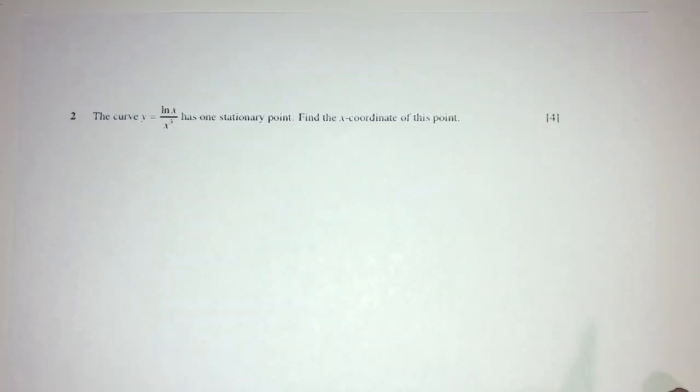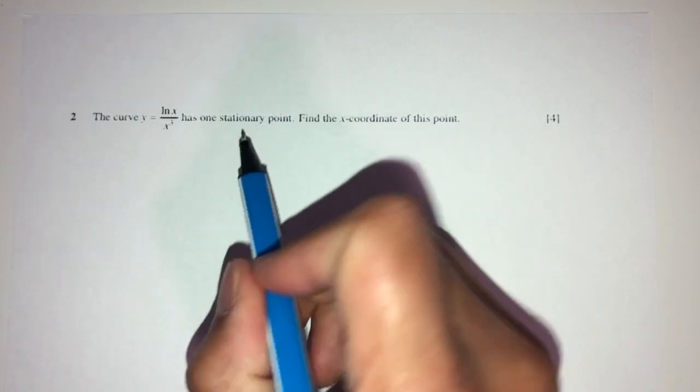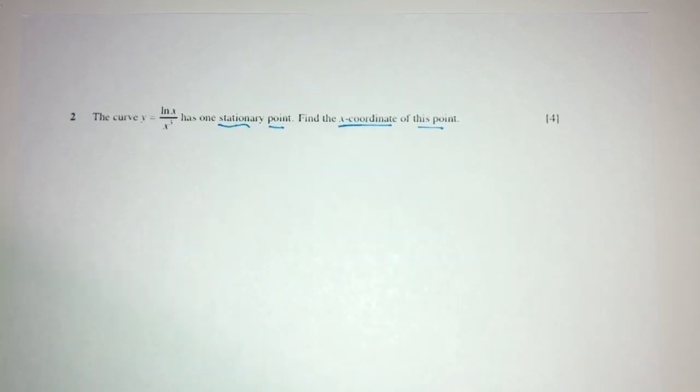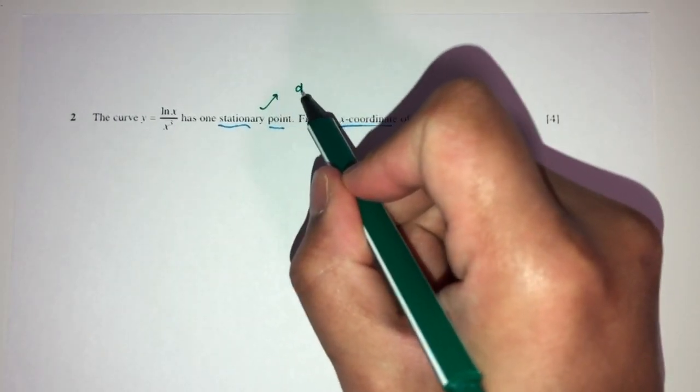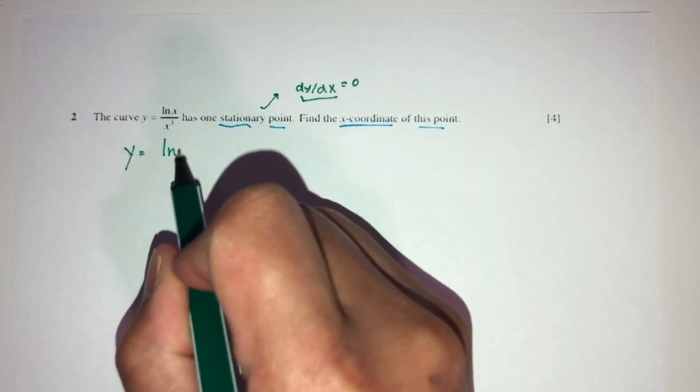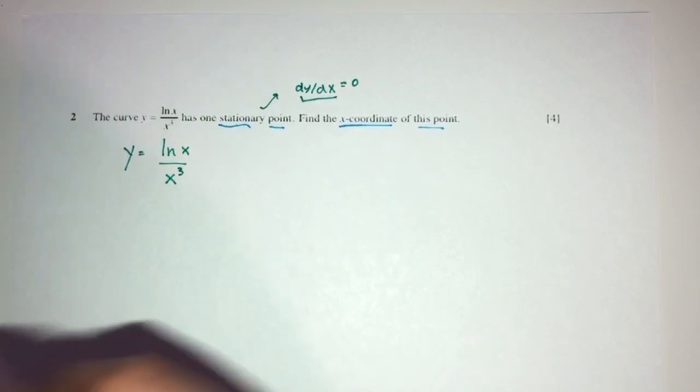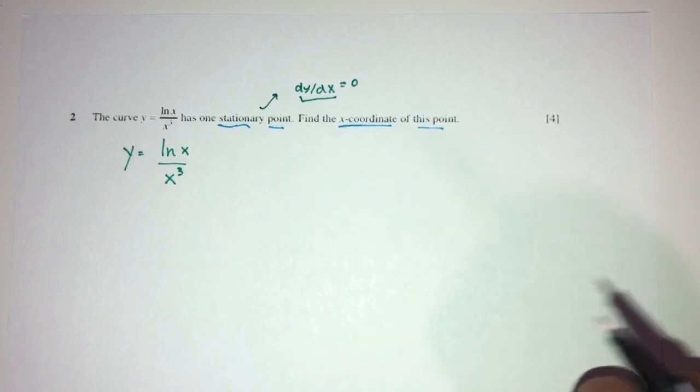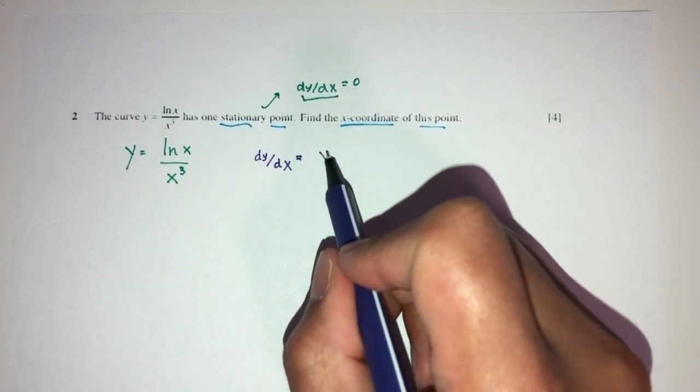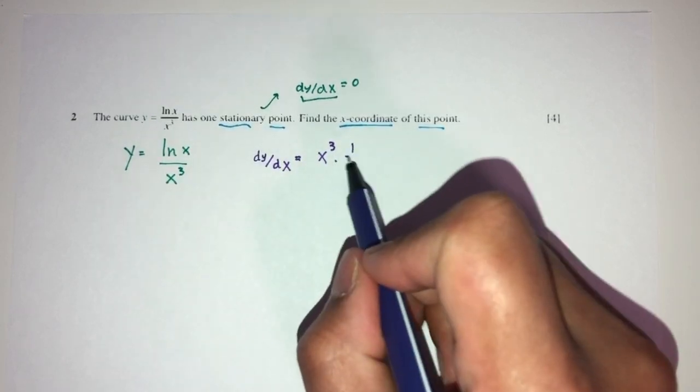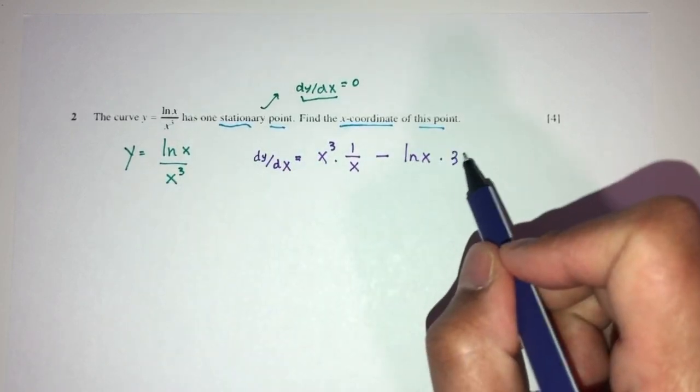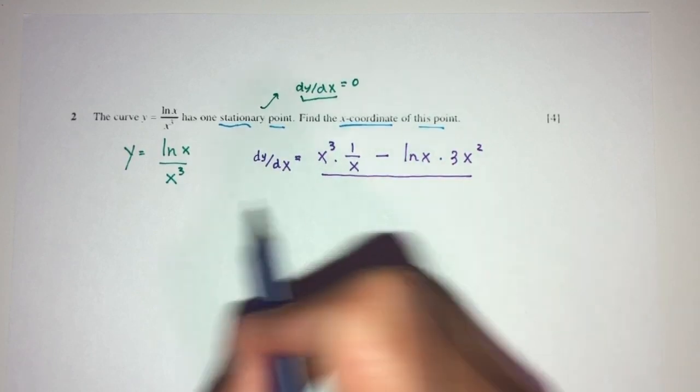Now, let's move on to question number 2. Here we have this equation of curve y = ln(x)/x³. We have a stationary point. We have to find the x coordinate of this point. Something we have to know right away is that at a stationary point, dy/dx has to be 0. So, we have to find dy/dx. y is given to you as ln(x) over x³. We have to differentiate using the quotient rule. dy/dx = [x³ × (1/x) - ln(x) × 3x²] / x⁶.